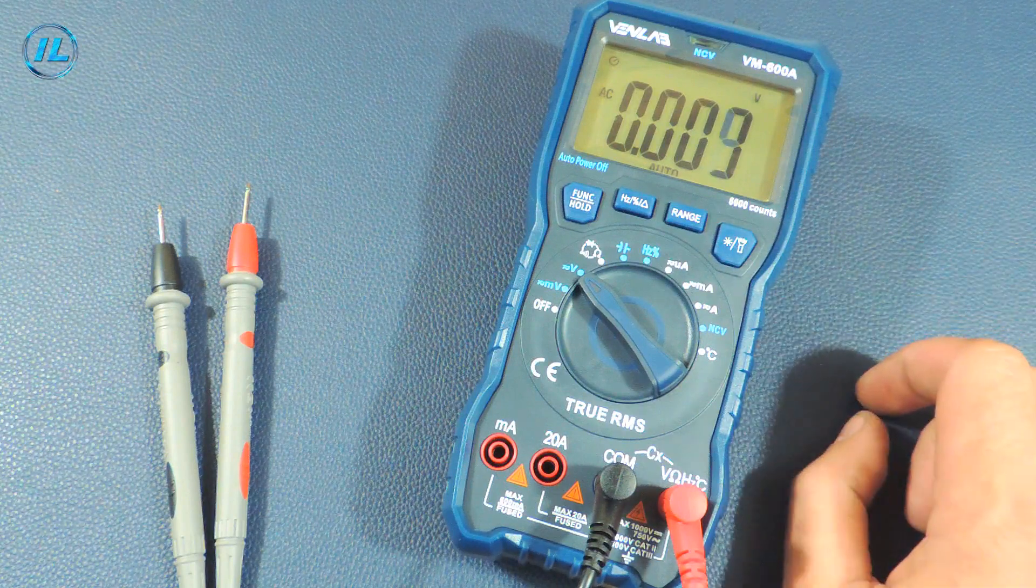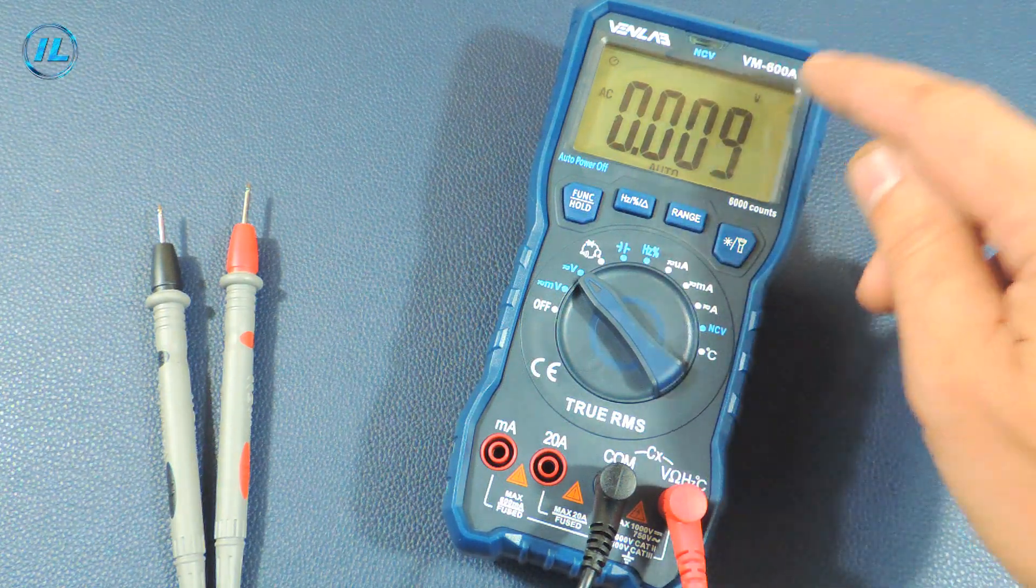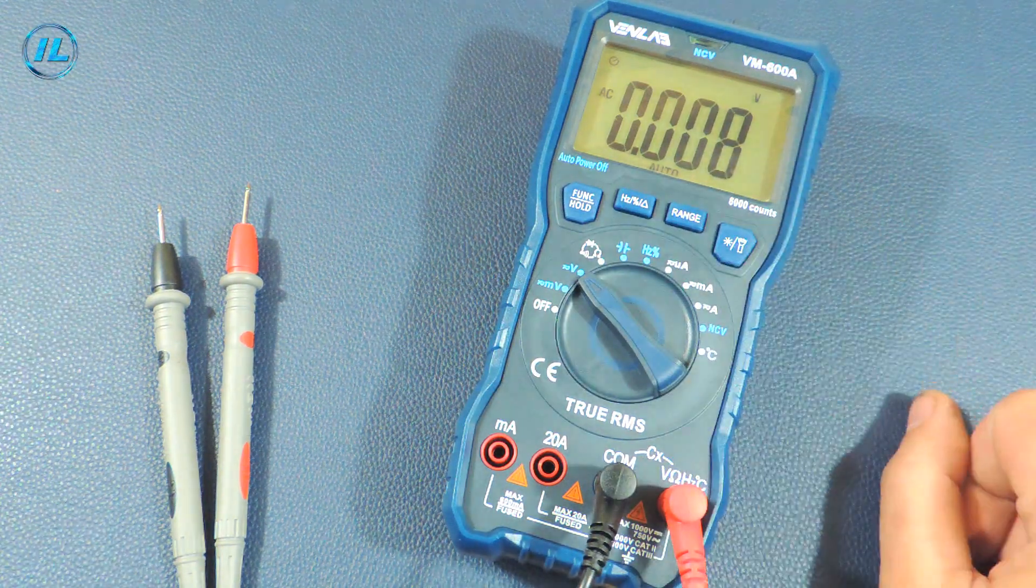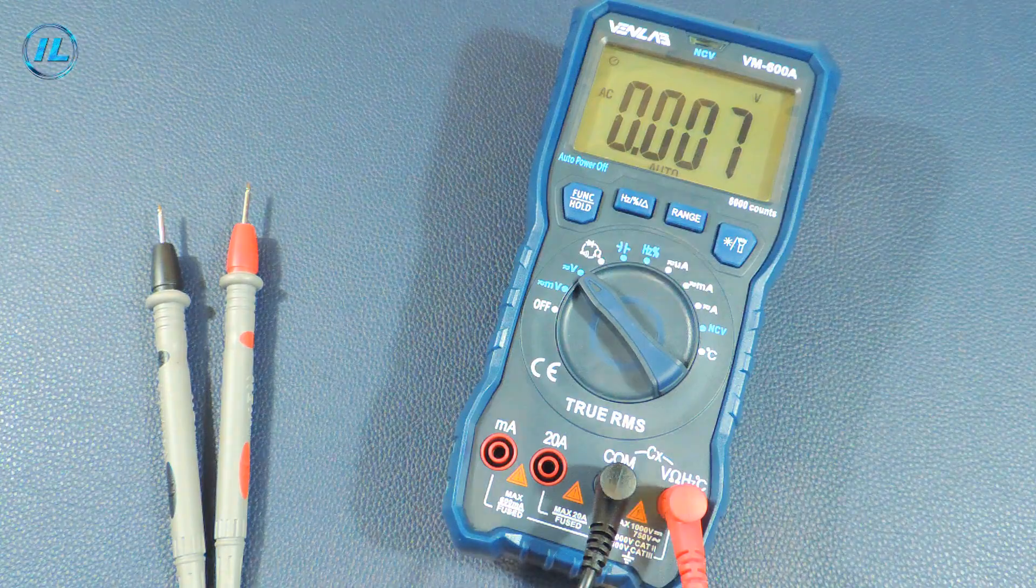So to summarize, it is quite obvious that the VM 600A multimeter is an accurate, reliable, and inexpensive measuring device. It will be very useful in any workshop.